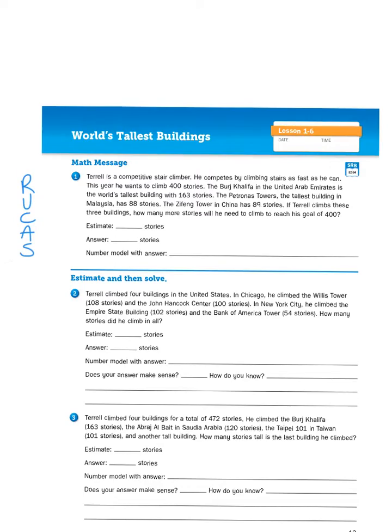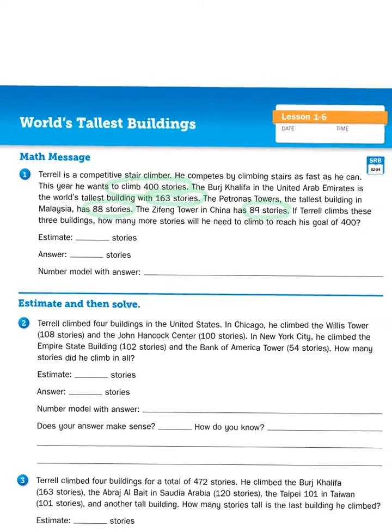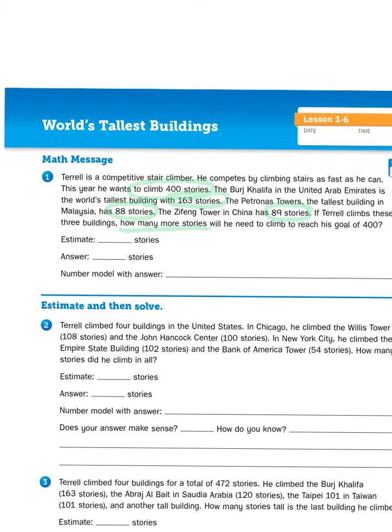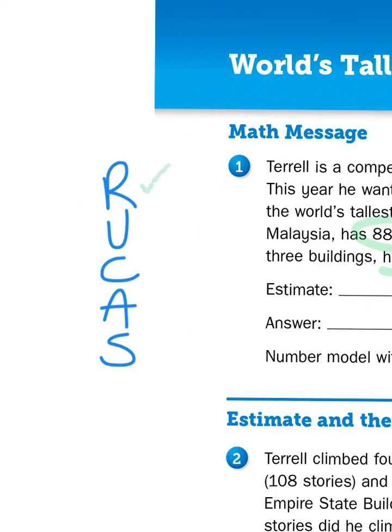Terrell is a competitive stair climber. He competes by climbing stairs as fast as he can. This year he wants to climb 400 stories. The Burj Khalifa in the United Arab Emirates is the world's tallest building with 163 stories. The Petronas Tower, the tallest building in Malaysia, has 88 stories. The Zifeng Tower in China has 89 stories. If Terrell climbs these three buildings, how many more stories will he need to climb to reach his goal of 400? So we've read the text twice. I found the question and I circled the important information. So now I need to come up with an action plan.